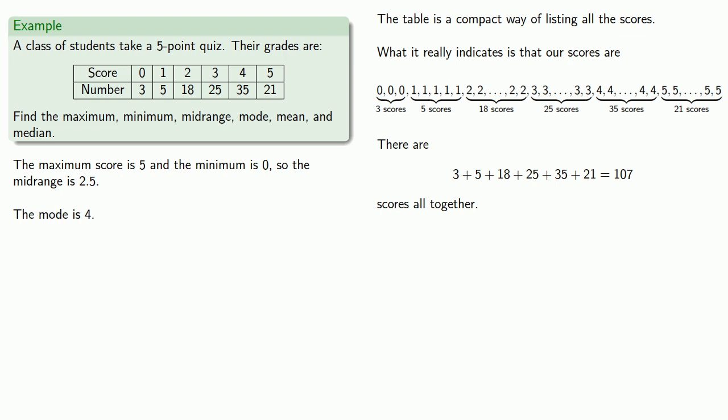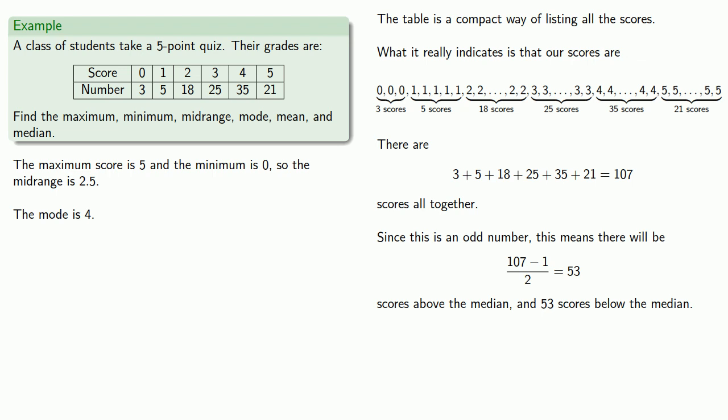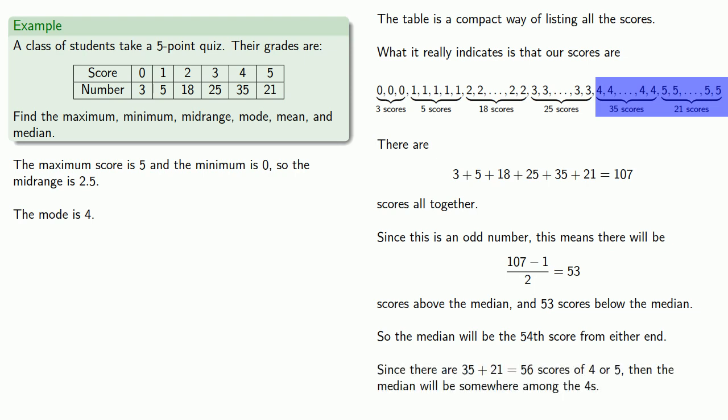Now I want the middle number. Since there's 107 scores, which is an odd number, if I subtract one, I get 106. I want half of those scores to be above the median and half below. So there's going to be 53 scores above the median and 53 scores below. The median itself will be the 54th score from either end. There are 35 plus 21, or 56 scores of four or five, so that median is going to be listed somewhere in this set of fours. The median will be one of the fours.